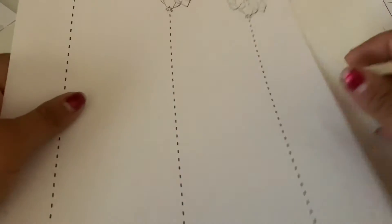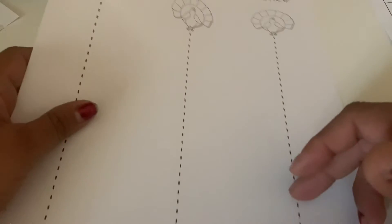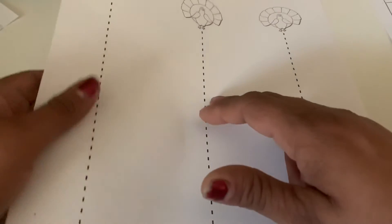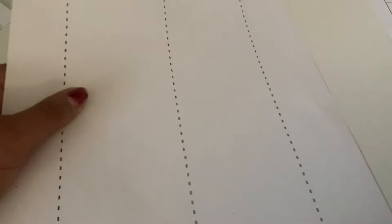So what we're going to do is we're going to take our scissors and we're going to cut these lines as close as we can, holding our paper with the other hand.